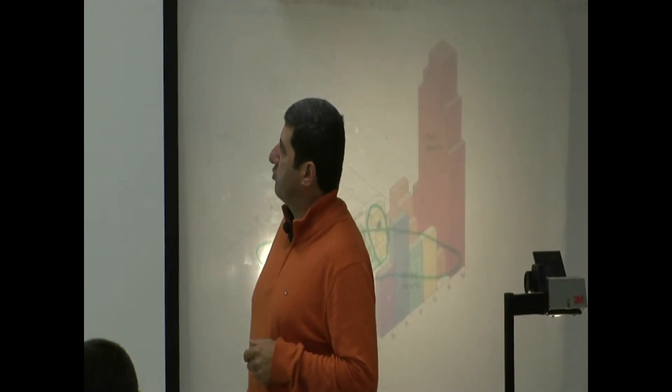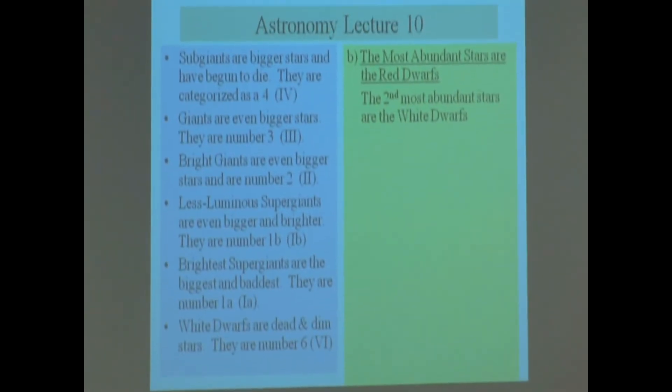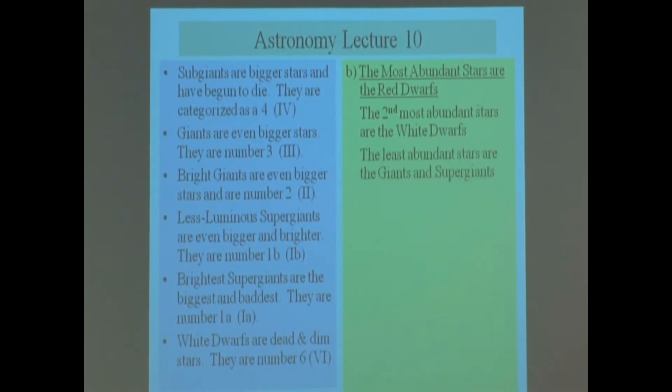So the most abundant stars are the red dwarfs. The second most abundant are white dwarfs. The least abundant stars are the giants and super giants.